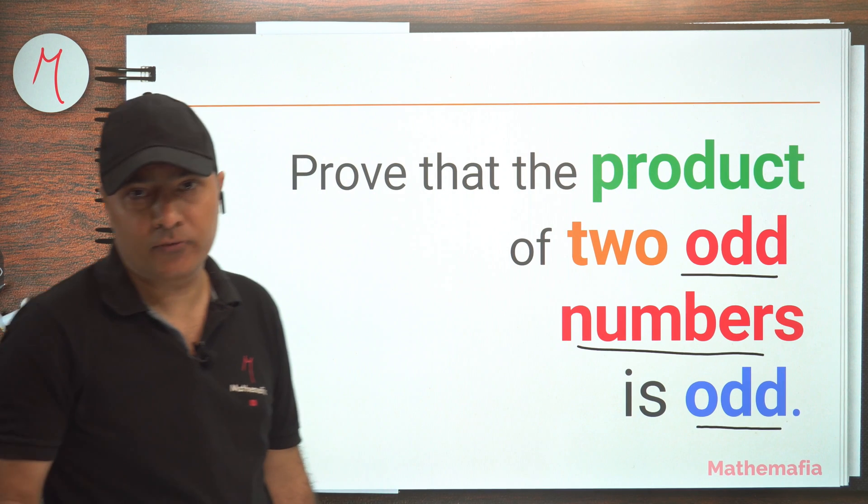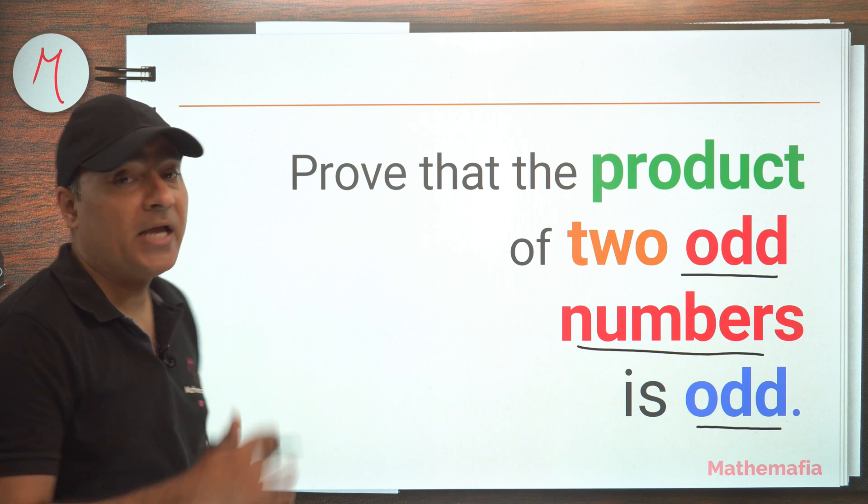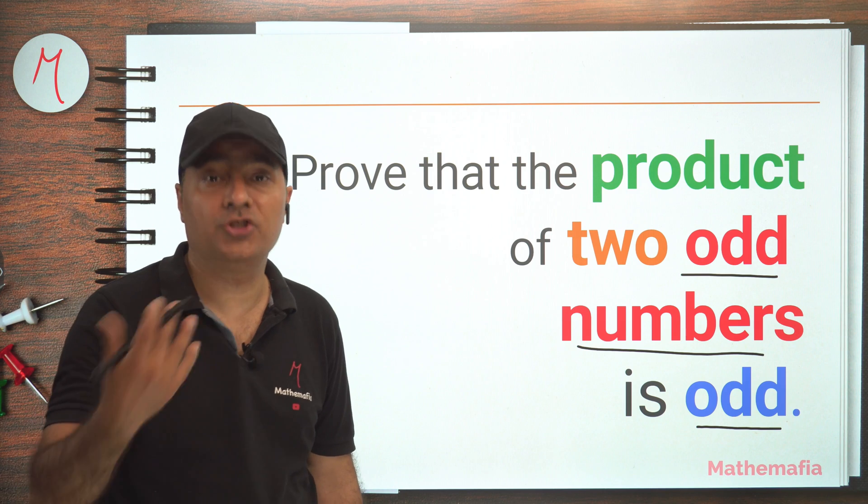This is very easy. We already know that if we multiply two odd numbers, the result is always odd. But we have to prove it, so it should be a generic proof.